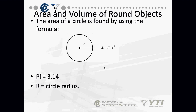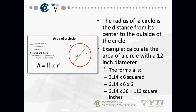Area and volume of round objects: area equals pi times radius squared. You don't need to memorize the formula — a formula sheet will provide it. The radius is from the center point to any outside edge, then squared and multiplied by pi (approximately 3.14). For a circle with a 12-inch diameter, the calculation is 3.14 times 6 squared, which equals 113 square inches of area.